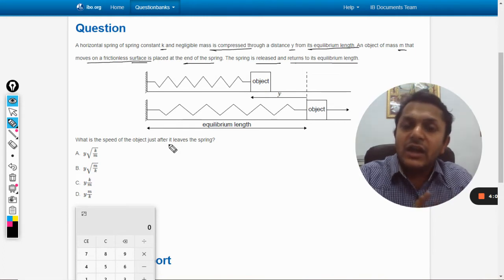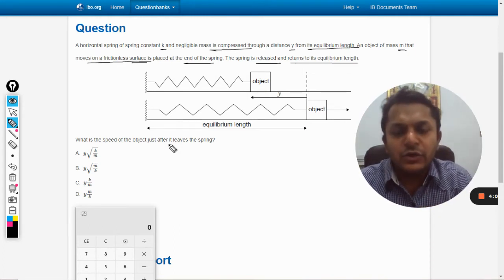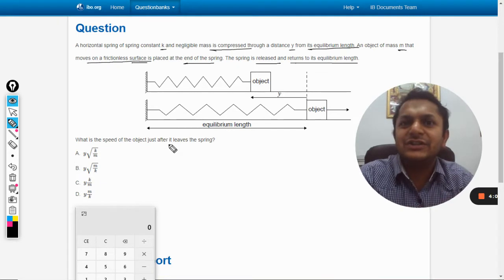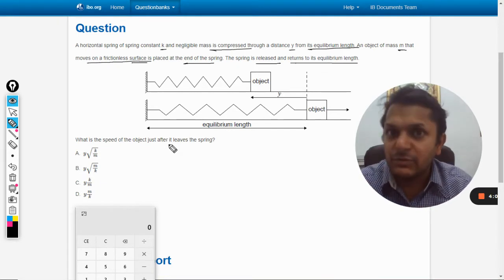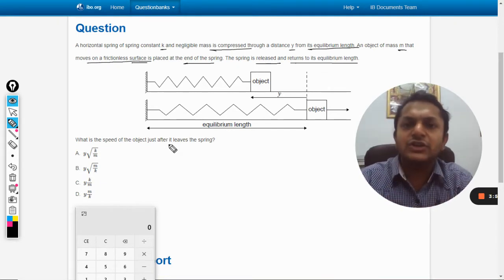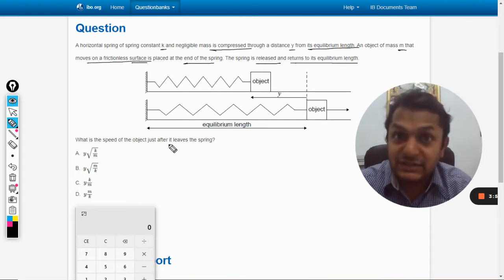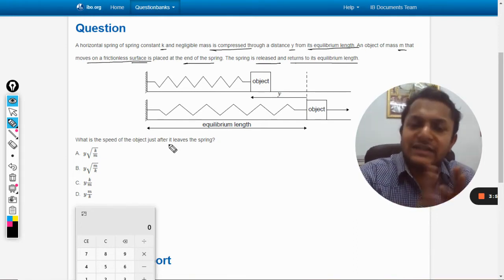As we know, as a matter of theory, at the mean position the velocity becomes maximum. So at the mean position, the velocity of the object will be maximum, and it will disconnect itself. It will leave the spring because it is not actually attached to it.